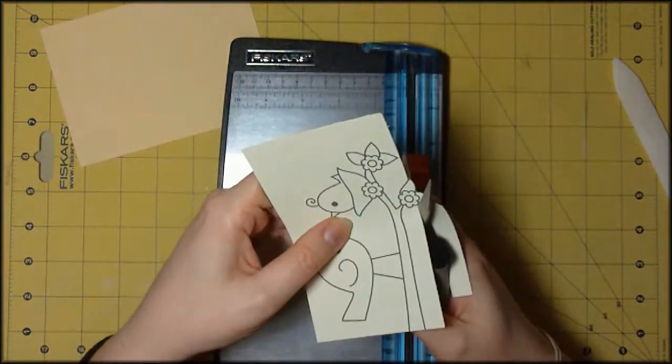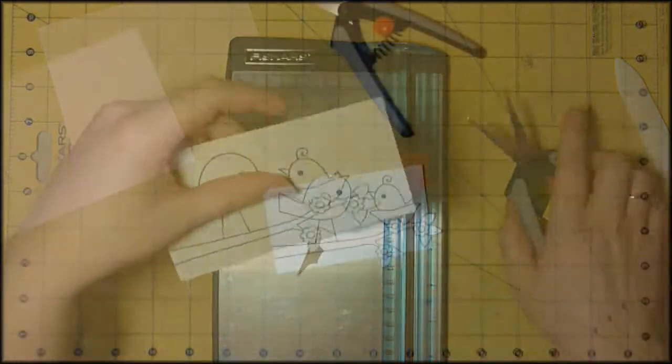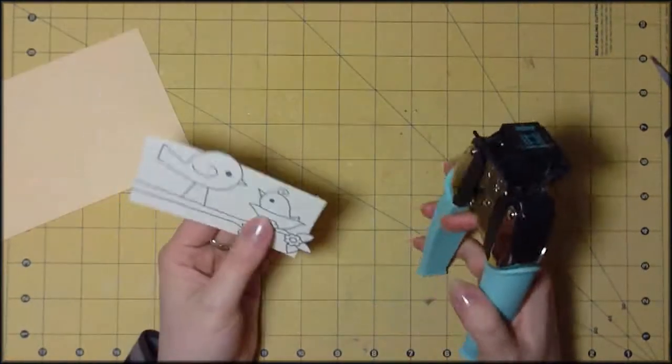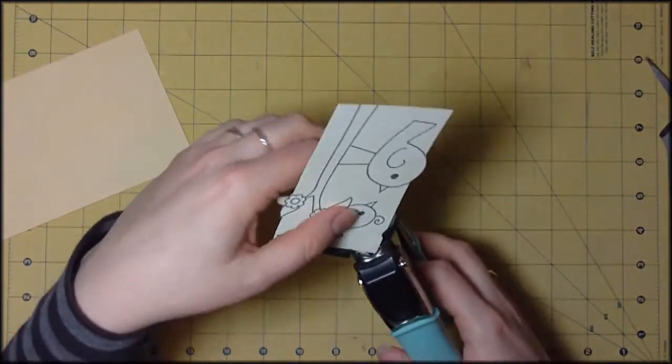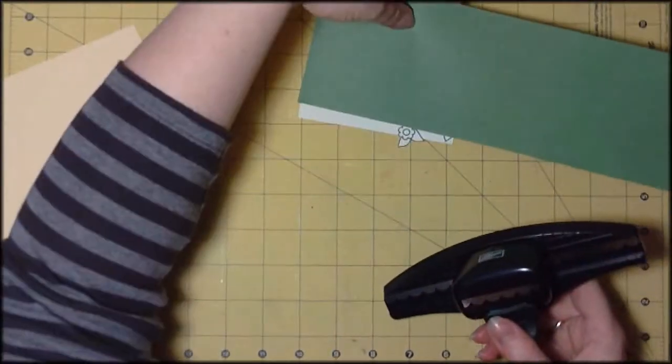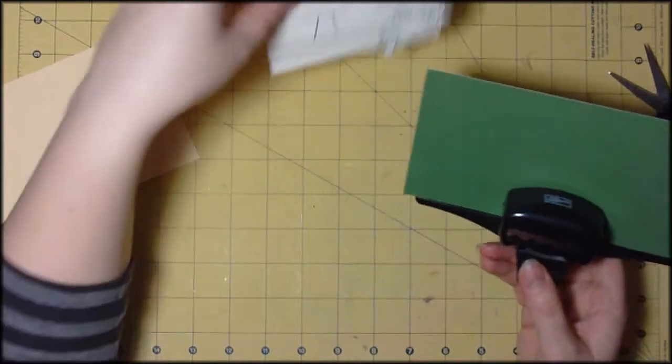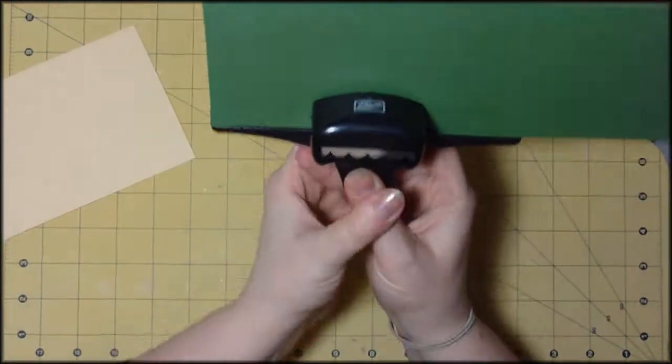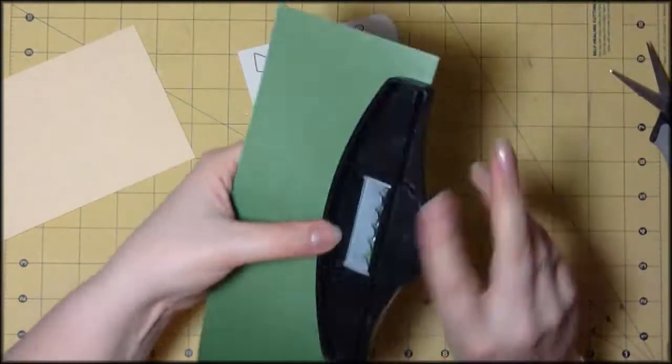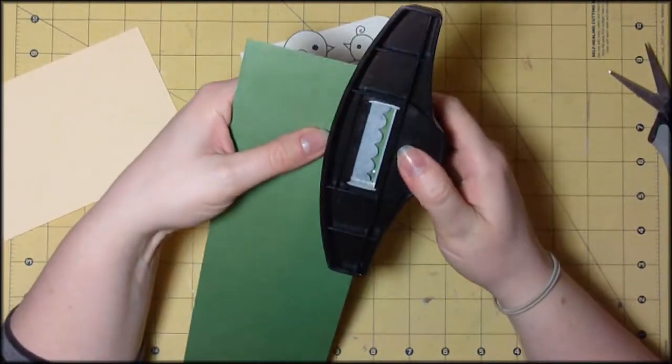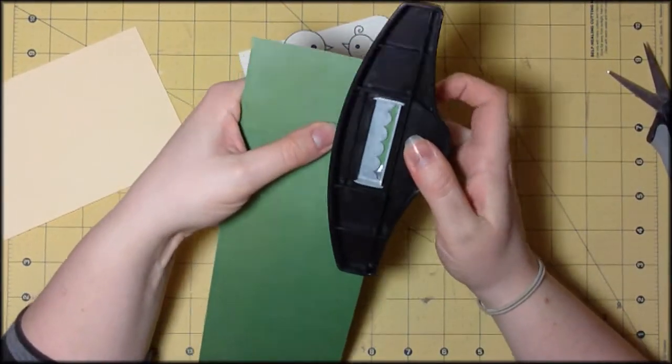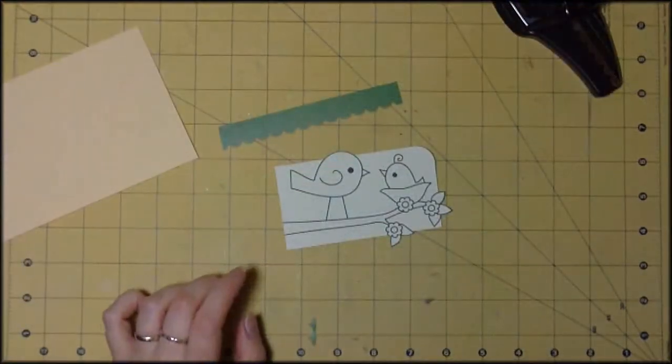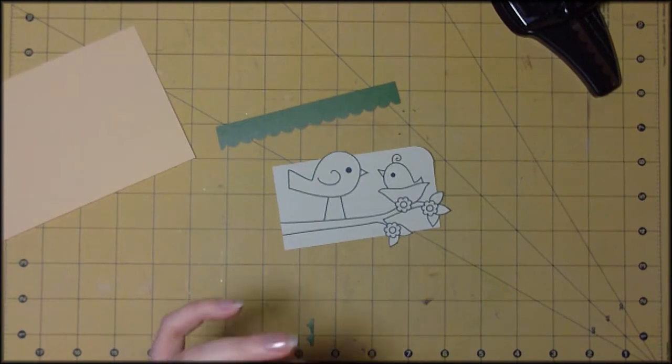You can see here that I've cut out those three sides and I just corner chomped the top right hand corner there as well. Here I'm just measuring up how long I'll need that scallop border edge and I'm using my Stampin' Up scallop punch. You can also use the one by Fiskars. I just happened to have bought this one. I have no preference on either.